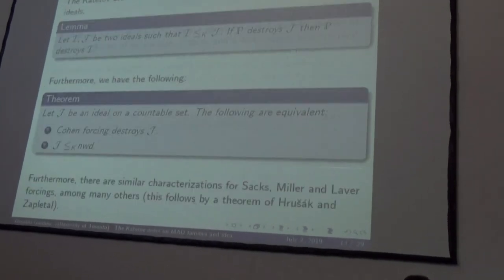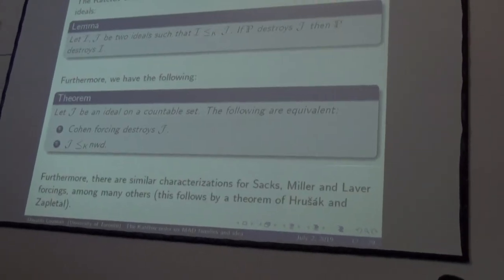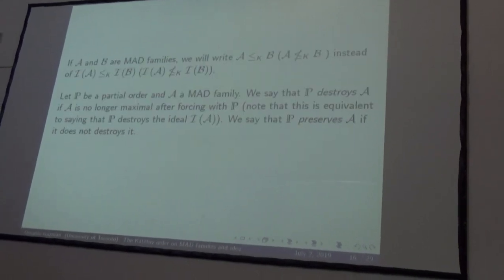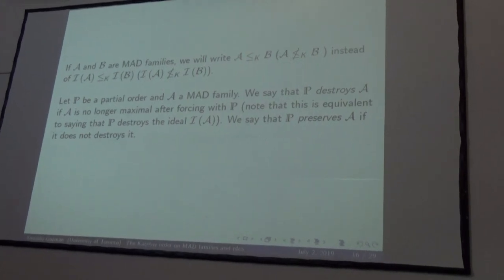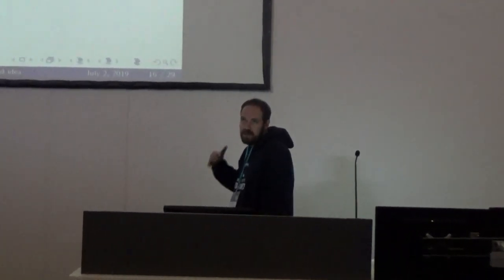From this, for example, you can see that if a forcing adds a dominating real, it destroys fin×fin, and then it also destroys I(A) for every MAD family A. A forcing destroys a MAD family if A is no longer maximal after forcing, and this is equivalent to destroying the ideal generated by A. B preserves A if A is not destroyed. So if a forcing adds a dominating real, it destroys every MAD family.